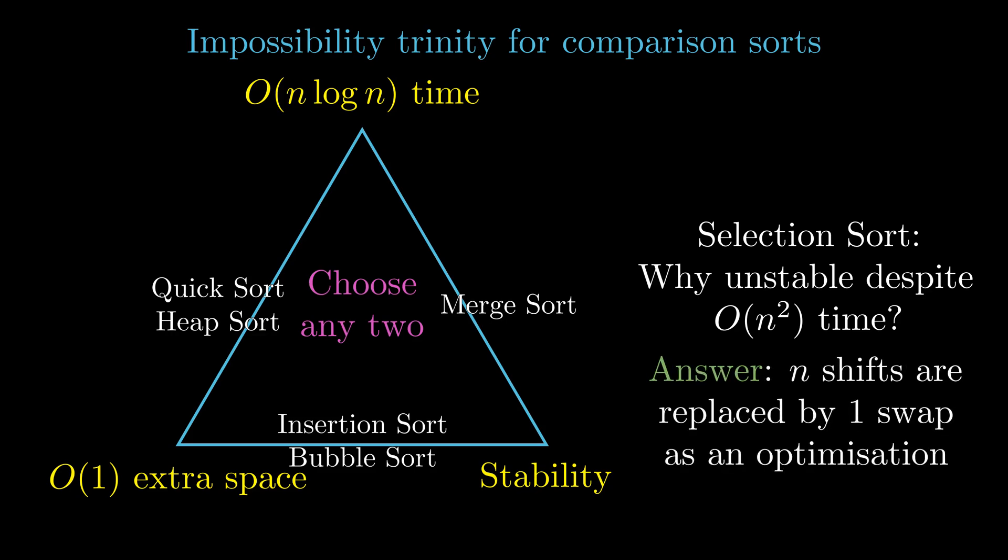The reason is that the standard selection sort employs a shortcut where it replaces n shifts by one swap of the non-adjacent elements.